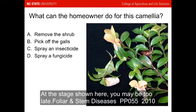Here's another camellia example from springtime: some leaves look normal, but others are thickened, kind of waxy, with a little white fuzz underneath — camellia leaf gall. Should you remove the shrub, pick off the galls, spray an insecticide, or spray a fungicide? Pick off those galls, but do it before they start producing spores on the underside. Like oak leaf blister, this only has one cycle per year, and the spores spend summer in the buds ready for the next year.